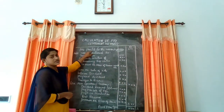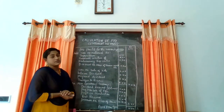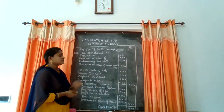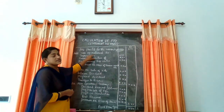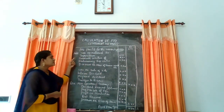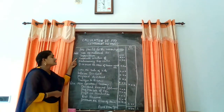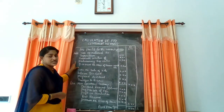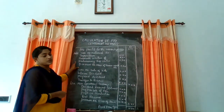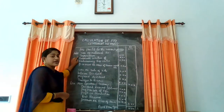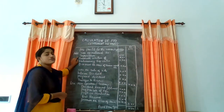What are non-operational expenses? Non-operational expenses are those which do not affect the business operation. Some of the non-operational expenses are: first one is depreciation. Depreciation means decrease in the value of fixed asset. Depreciation is an expense that is already debited in the Profit and Loss account.